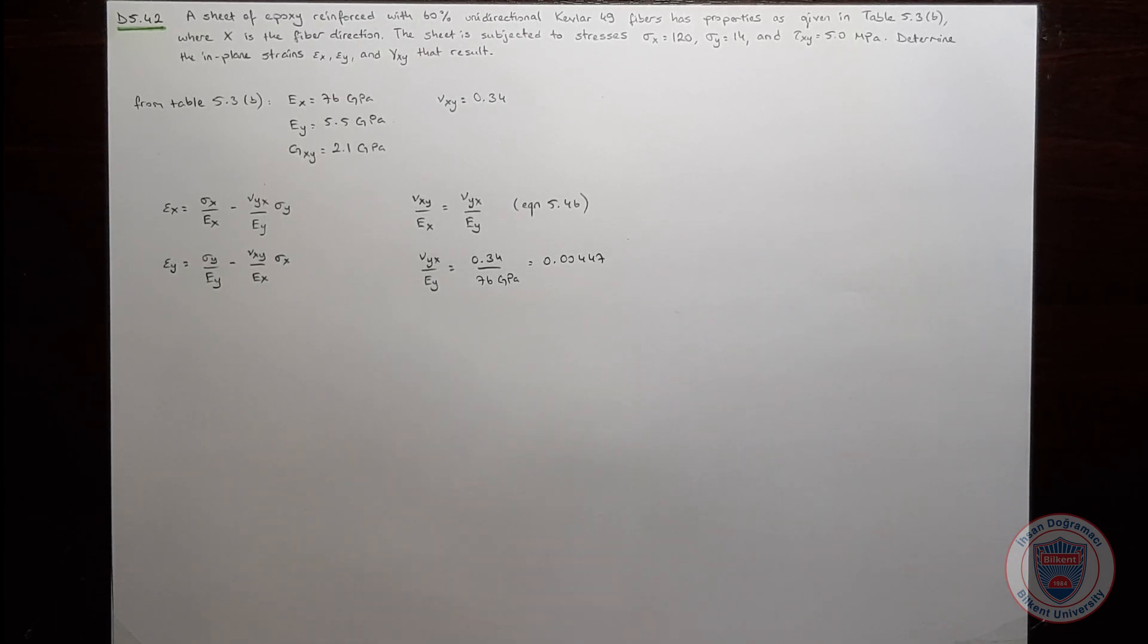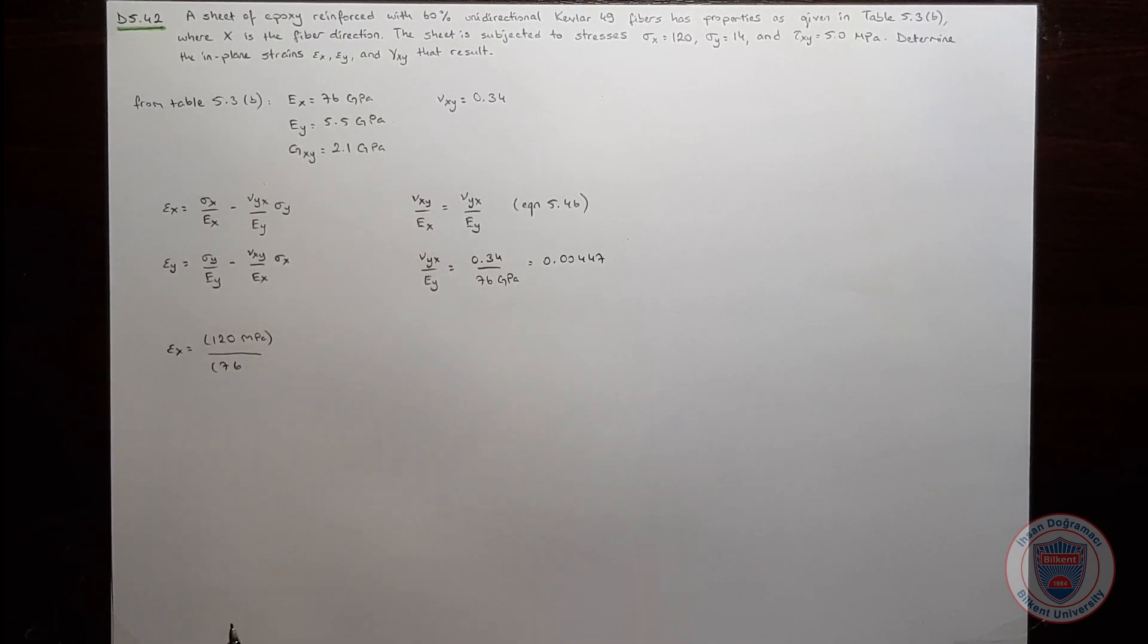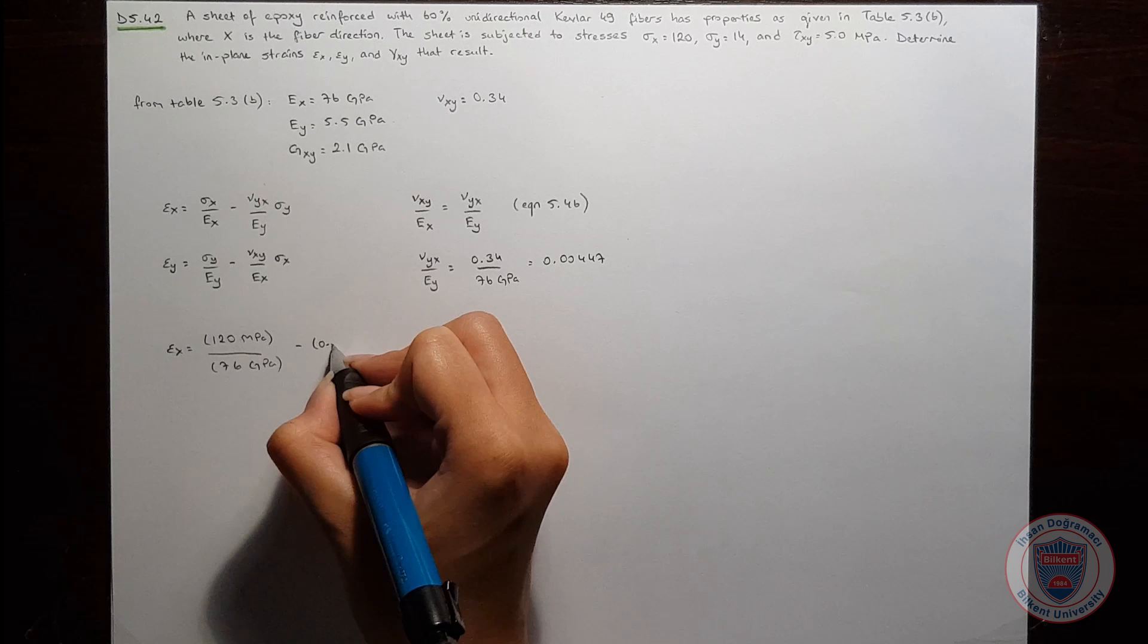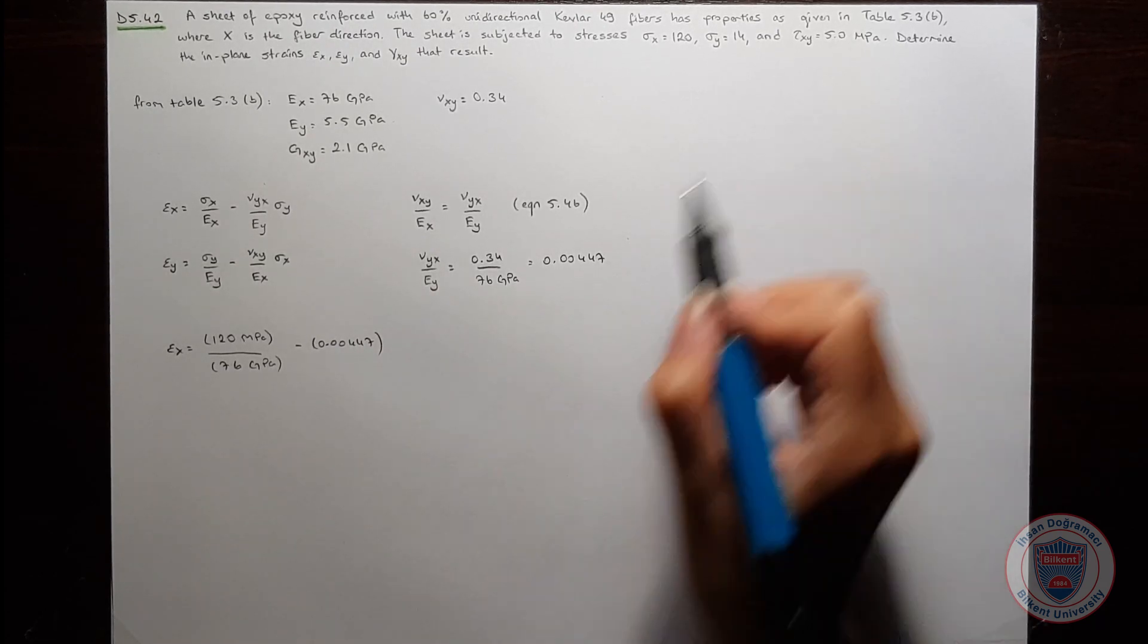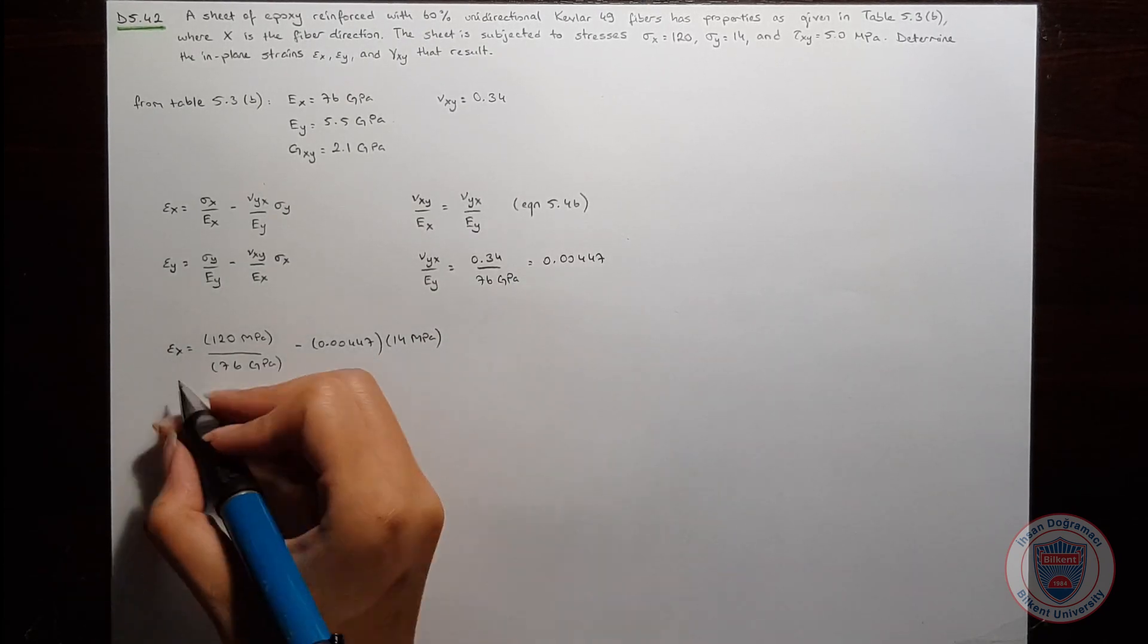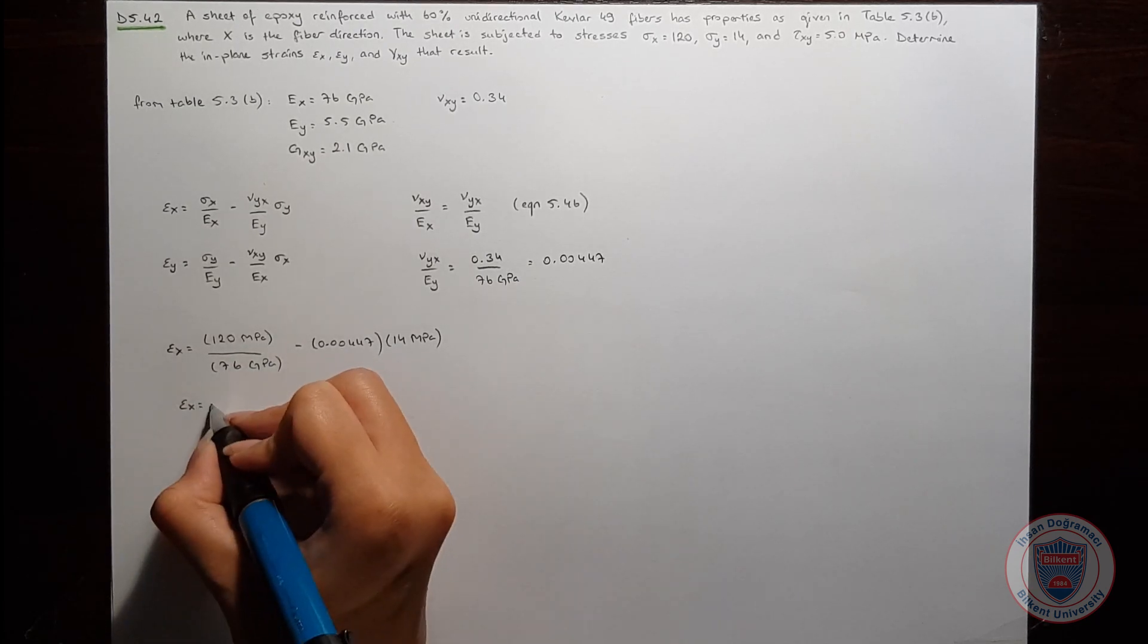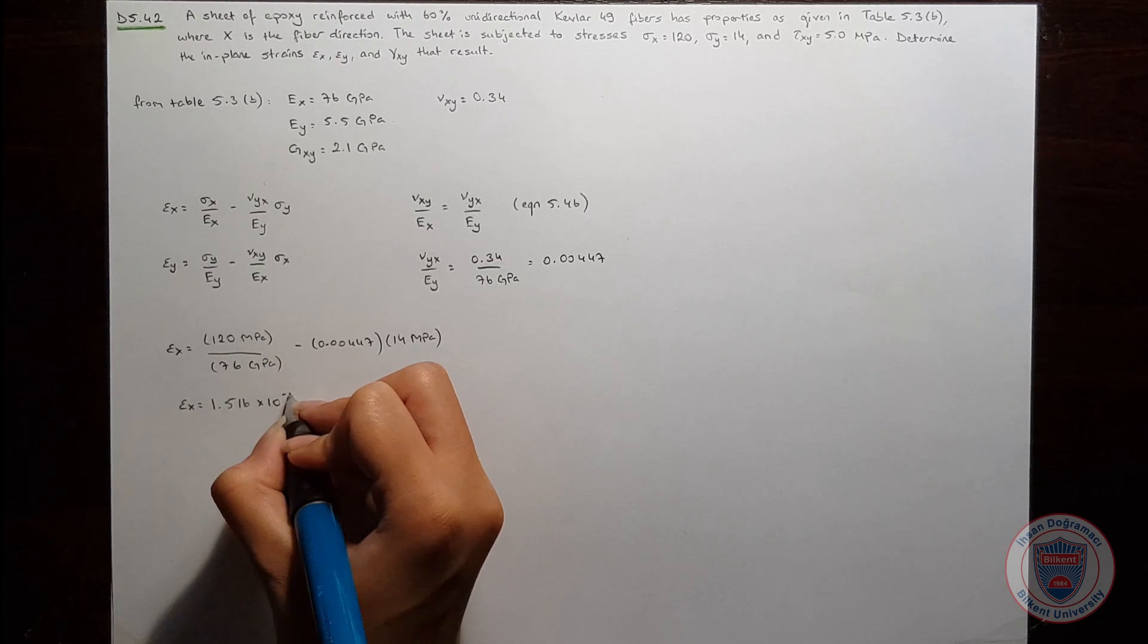Let's substitute all of the values into the equations and calculate epsilon X and epsilon Y. Epsilon X is equal to 120 MPa over 76 GPa minus 0.00447 times 14 MPa. This gives epsilon X equal to 1.516 times 10 to the power of minus 3.